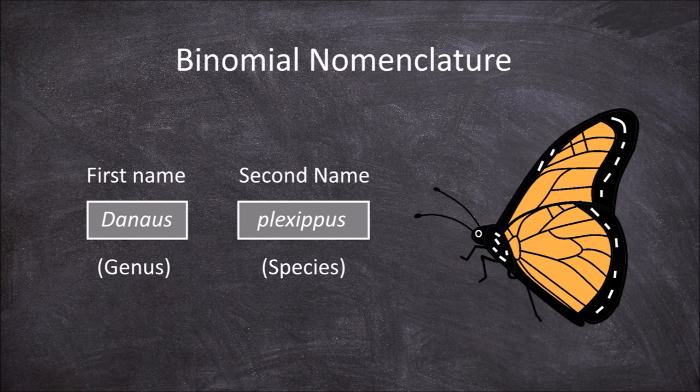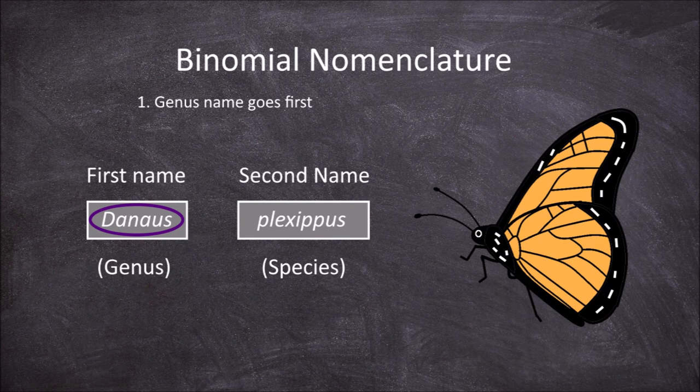There are specific rules used in formatting binomial names. The first of these is that the genus name is always written first. In the monarch butterfly example, this means the genus name Danaus comes first — the species name Plexippus never comes before the genus name.